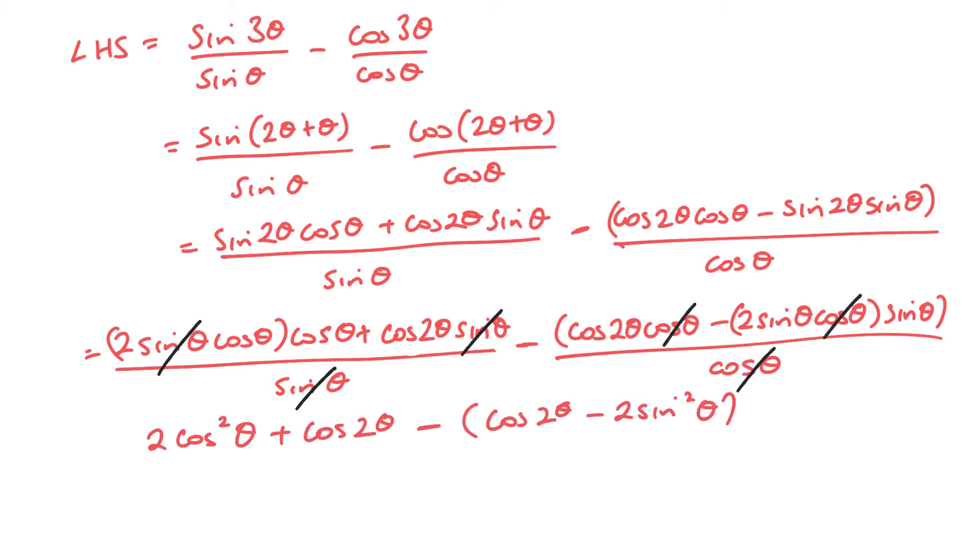And simplifying this leaves the cos 2 theta and the minus cos 2 theta to cancel out. And I'm going to end up with a sine squared and a cos squared, which I know equals 1.